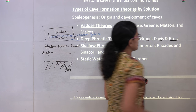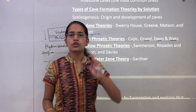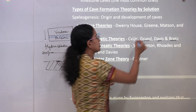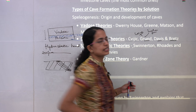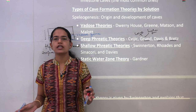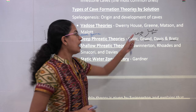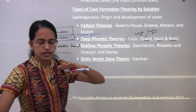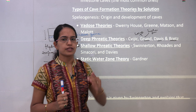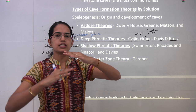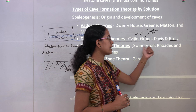There were three basic sub-theories under the deep phreatic. The first is by Grund. Grund gave two levels: a lower level and a higher level. The lower level, he said, is saturated with water and is basically stagnant water that remains there. However, the higher level is the area where water circulates and replaces the regional water table — so whatever water table is there is being constantly replaced and circulated.